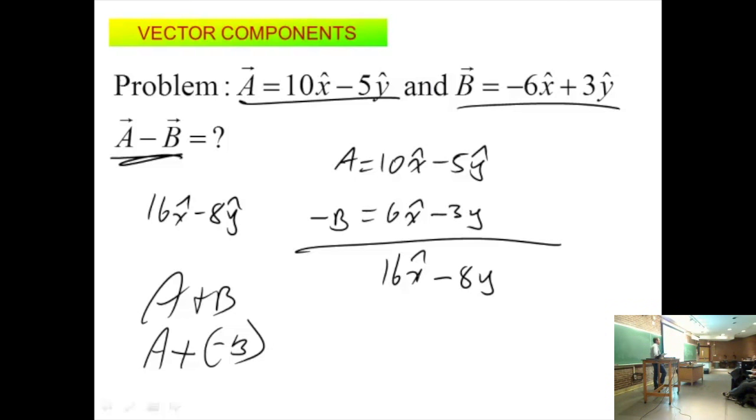Why isn't it 10 minus 6? Because last class, when we talked about adding vectors, you have to follow this rule. A minus B would be A plus the negative of B. You've got to come to an understanding that vectors do not add or subtract or multiply and divide like regular numbers.